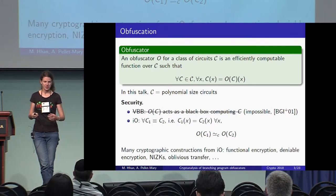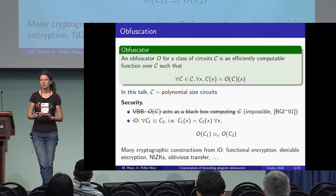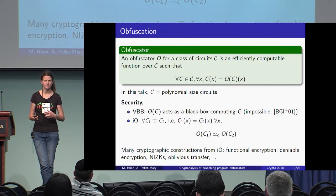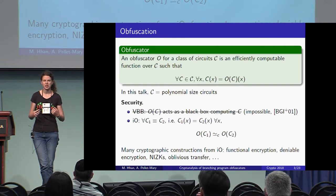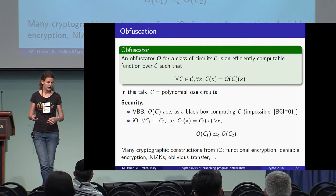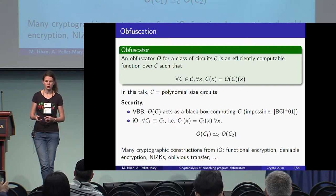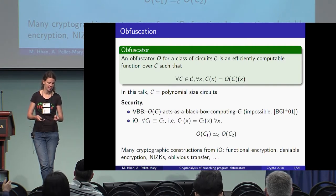Indistinguishability obfuscation requires that for any two equivalent circuits — circuits that compute the same function — the obfuscated versions of the two circuits are computationally indistinguishable. All the obfuscators described in this talk are candidate indistinguishability obfuscators. This definition may seem strange since what we really want is for the obfuscated program to hide the circuit, but it still has many applications to cryptographic constructions such as functional encryption.